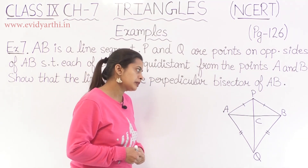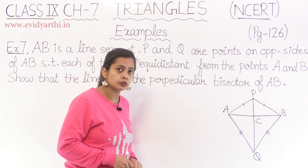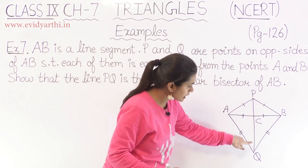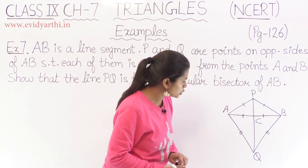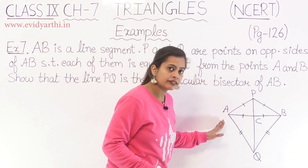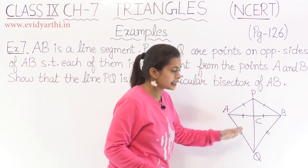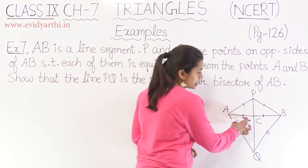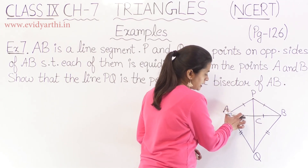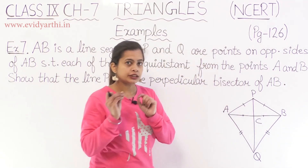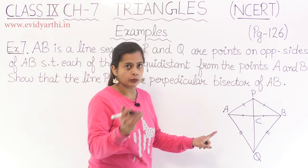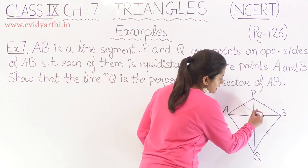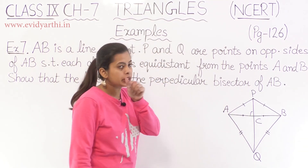Perpendicular bisector means we need to show two parts. First, it is a bisector — meaning the line PQ divides AB into two equal parts. And second, we need to show that the two angles formed are 90 degrees, because it is perpendicular. We need to show both of these.